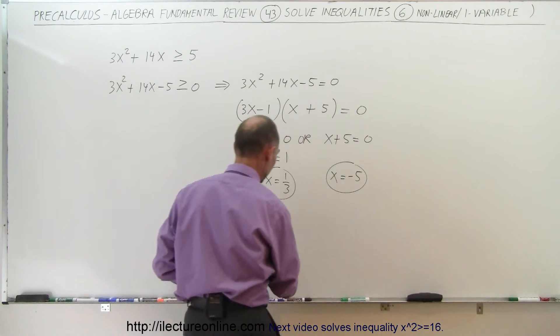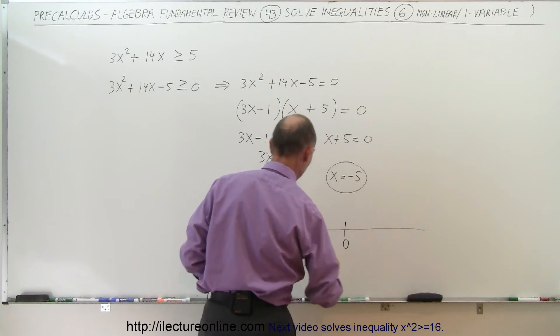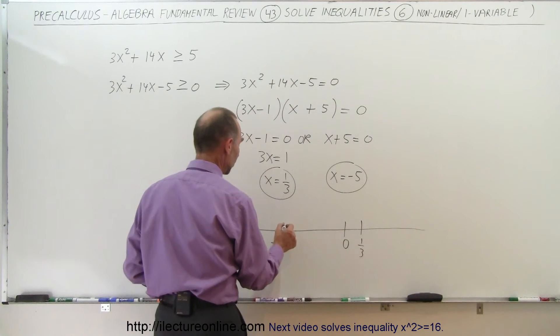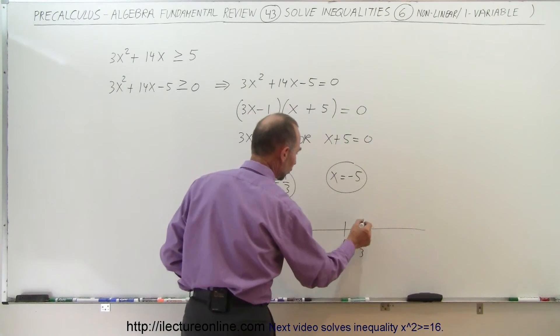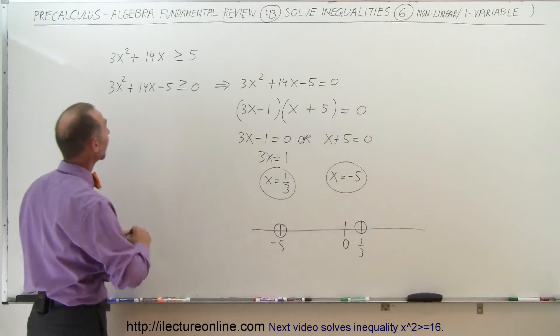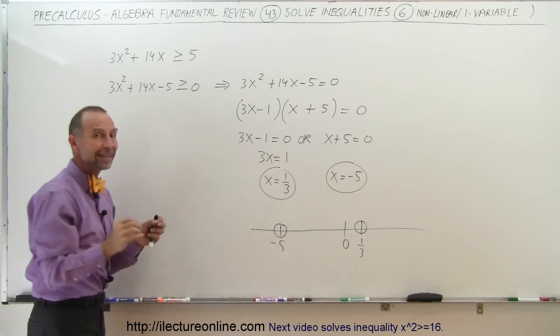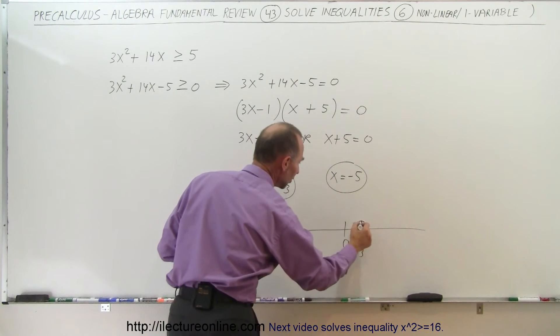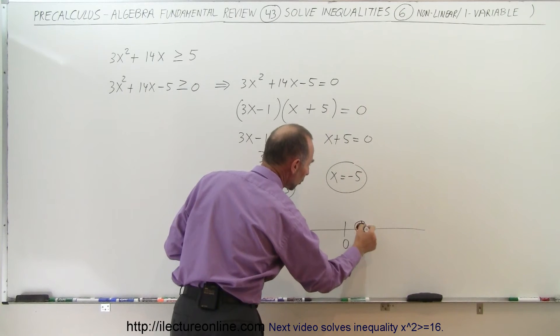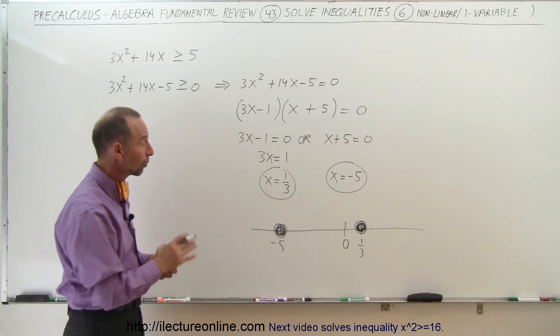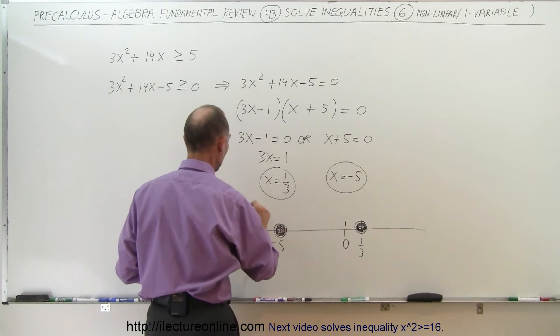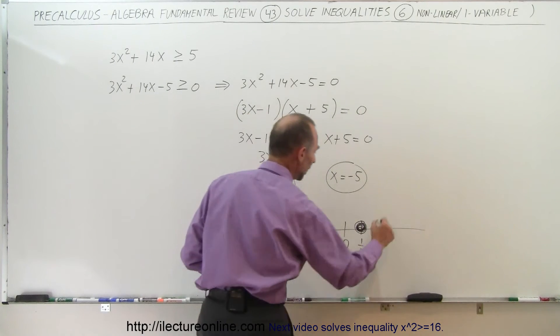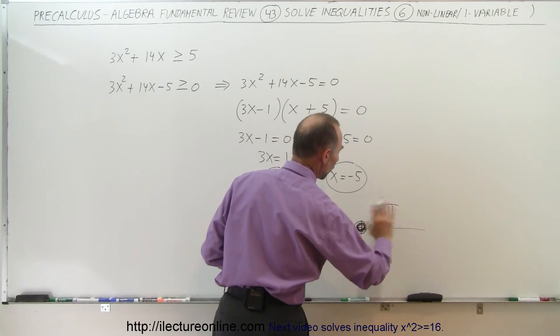Now when we draw a number line, we can find those two points. Here we have the point zero, there we have the point negative 5, and there we have the point positive 1 third. Since these are the critical points, we'll draw little circles around them. We also notice we have a greater than or equal symbol, which means the endpoints are included in the solution, so we can make them solid. That gives us the indication that those endpoints will also belong to the solution. Notice there's three regions on this number line. We have region 1 to the left of negative 5, region 2 between the two critical points negative 5 and 1 third, and region 3 to the right of 1 third.